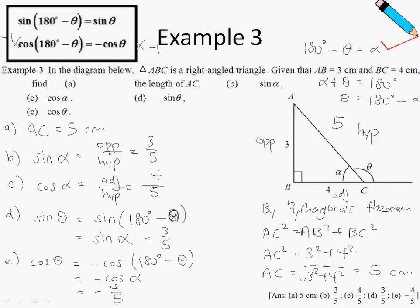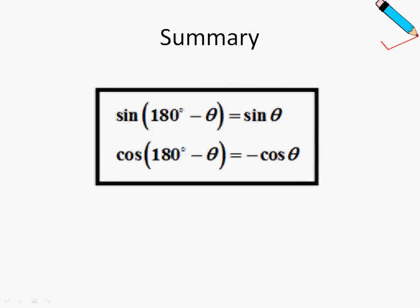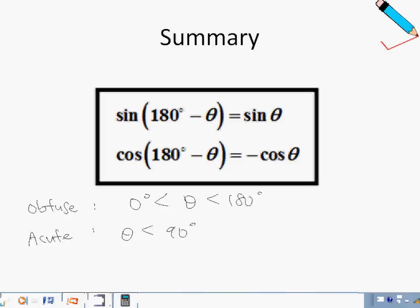So we've come to the end of the three examples. To summarize, these are the two important formulas dealing with obtuse angles. Obtuse means the angle is between 0 and 180 degrees, and acute means the angle is less than 90 degrees. That's all for today's video — see you in the next one.